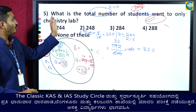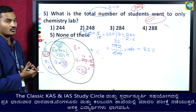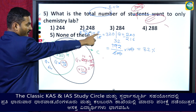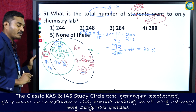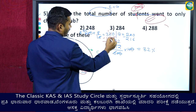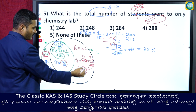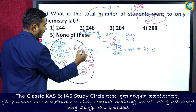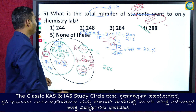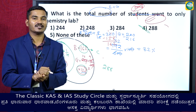Fifth question: what is the total number of students who went to only chemistry lab? Boys: total boys are 320, those who went to physics lab (only + both) = 128 + 30 = 158. So boys who went only to chemistry lab = 320 minus 158 = 162. Girls who went only to chemistry lab = 126. Total = 162 + 126 = 288 students went to only chemistry lab.